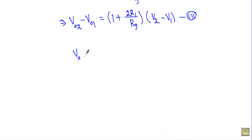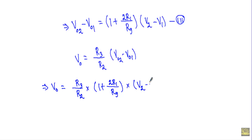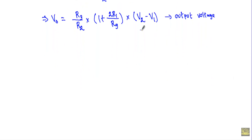From equation one I can write: output voltage VO equals R3 divided by R2, multiplied by V02 minus V01. Now substituting the value of V02 minus V01 from equation number three: VO equals R3 divided by R2, multiplied by (1 plus 2R1 divided by RG), multiplied by (V2 minus V1). This is the output voltage equation of our instrumentation amplifier.